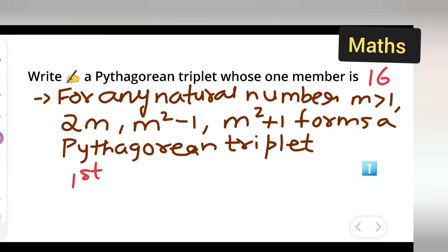First, you will write down the question: Write a Pythagorean triplet whose one member is 16. This is the solution. For any natural number m greater than 1, where m is positive...